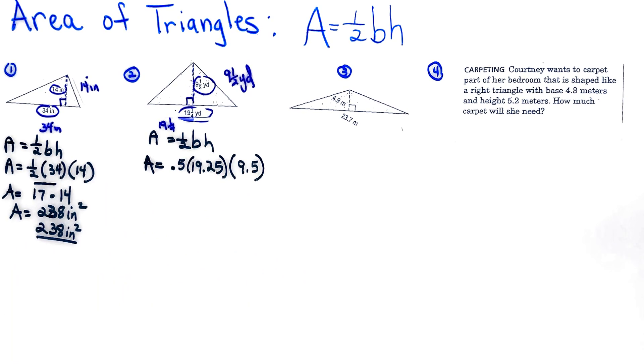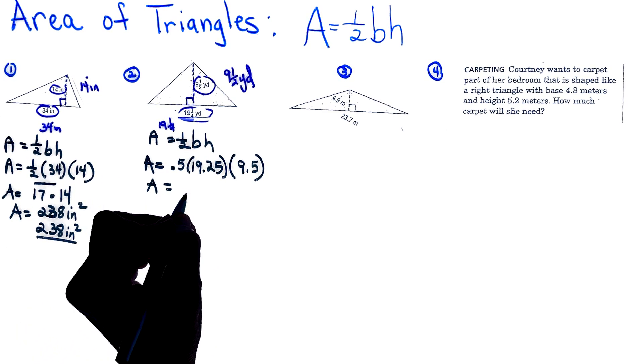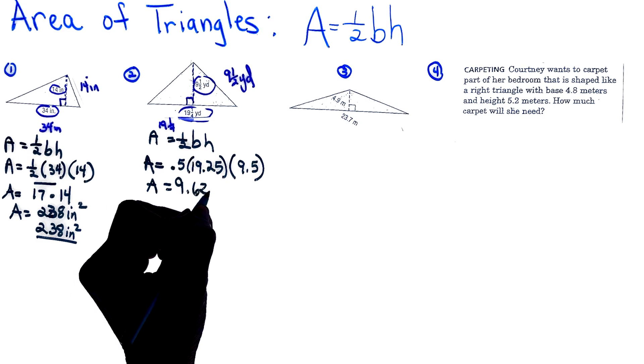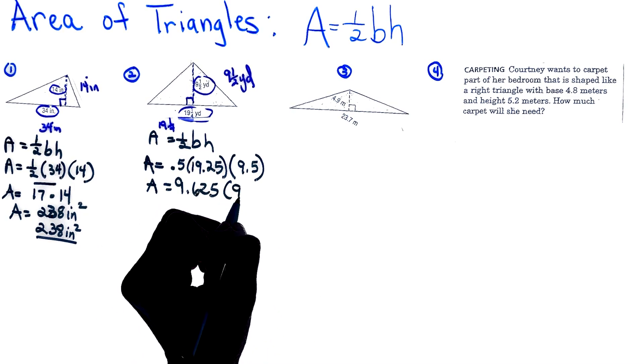As I am doing this math, I have half of 19.25 is equal to 9.625, and I am going to be multiplying that by my 9.5.